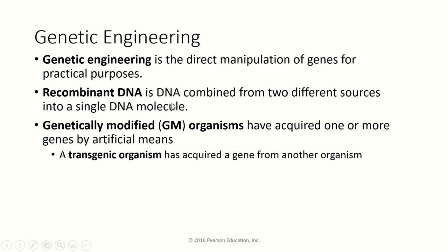Recombinant DNA is the DNA from different sources combined into a single molecule. We're going to talk about several different ways that scientists can recombine DNA — one is by adding a gene to a bacterial chromosome, one is by using a virus to add DNA to a eukaryotic chromosome. Anytime we take DNA from one source and put it into another source, that's recombinant DNA. The organisms that have that recombinant DNA are genetically modified.